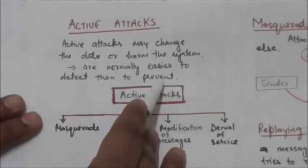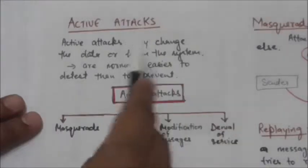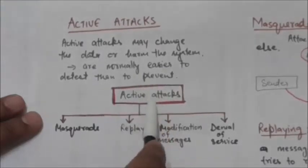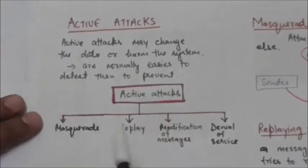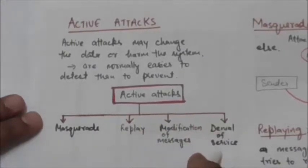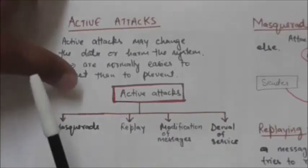Because an attacker can launch them in a variety of ways, active attacks are normally easier to detect than to prevent. Active attacks can be subdivided into four categories: masquerade, replay, modification of messages, and denial of service. We will study about these types one by one.